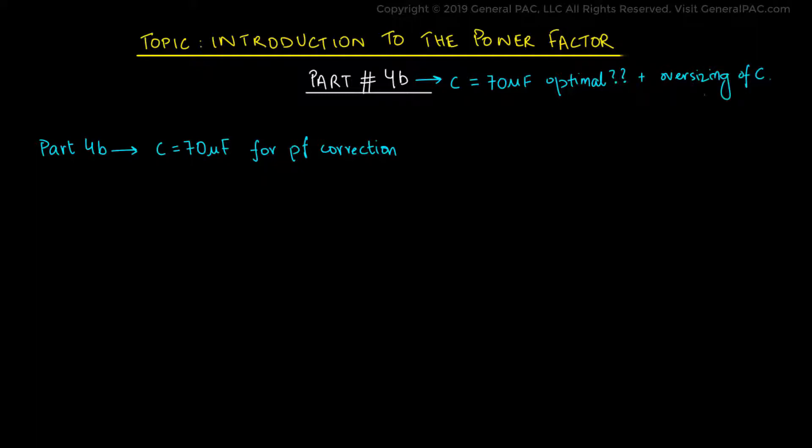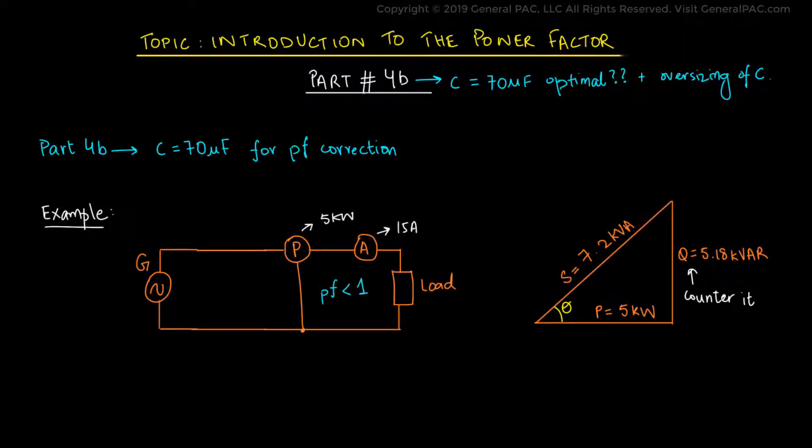In the previous part, Part 4a, we used our engineering judgment to decide on a capacitor of size 70 microfarads for power factor correction requirements. We will now verify whether or not the selection has any positive effect on the system. Now let's revisit this example and draw the diagram that we used in Part 4a. We will now insert a 70 microfarad capacitor into the system.